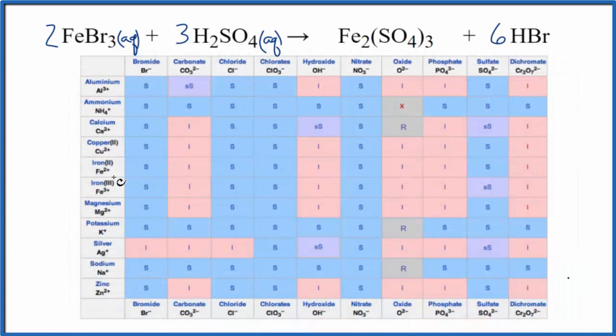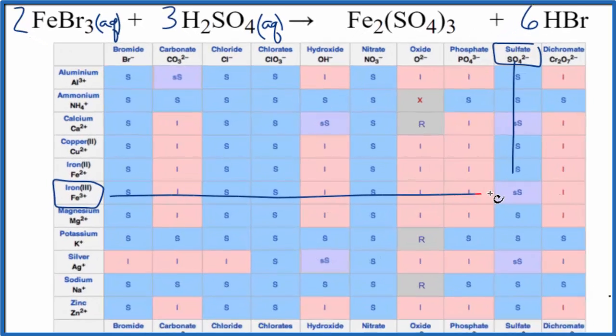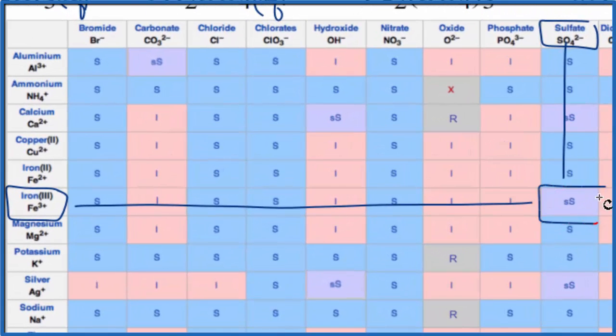So I go down, here's my iron 3 right here, Fe3 plus, and then here's the sulfate, SO42 minus. So I go down and over, and they meet right here at this SS. SS means it's slightly soluble. A little bit of it will dissolve, but not very much. Most of it's going to be a solid.